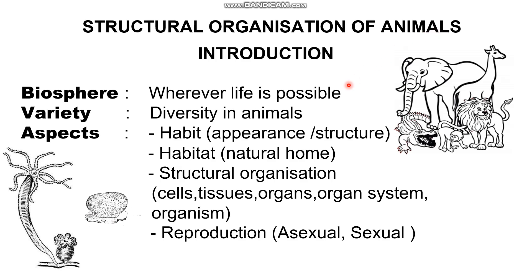In this chapter, we are talking about diversity in animals. There are animals that differ in appearance — natural appearance — and there are other aspects of difference as well. In all aspects, animals differ.